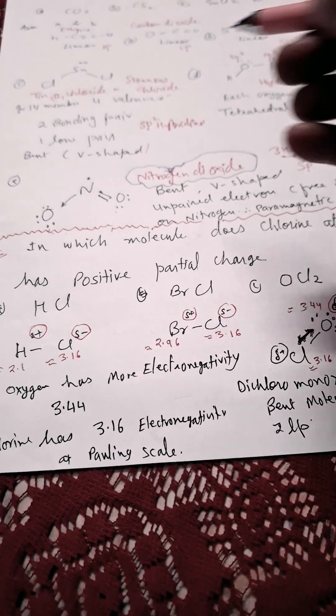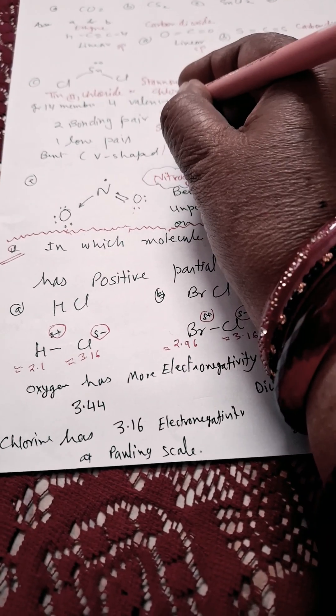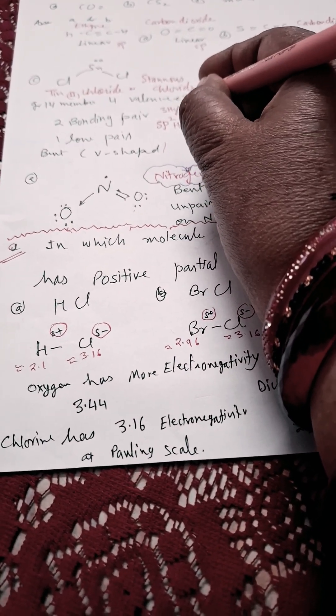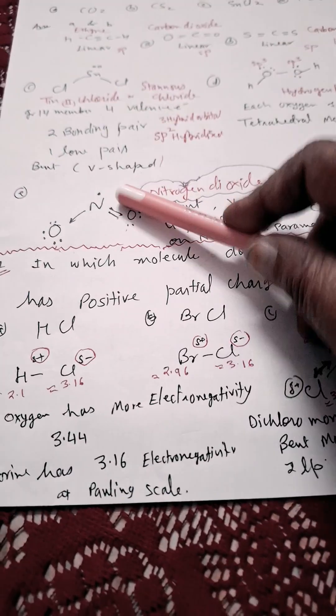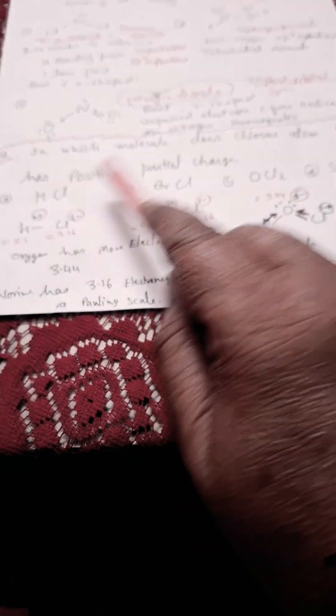I am giving you all the questions which can be asked. So here three hybrid orbitals in both the cases. So question can be asked which is paramagnetic? N is paramagnetic.